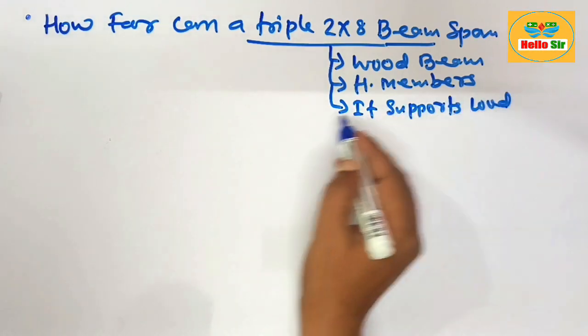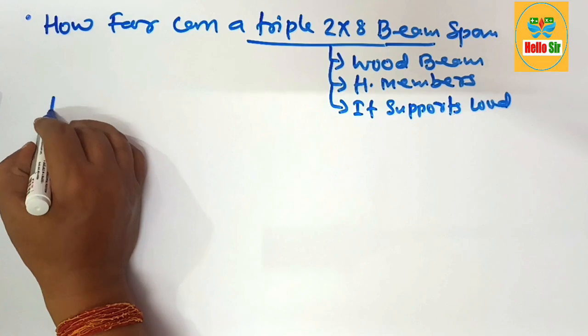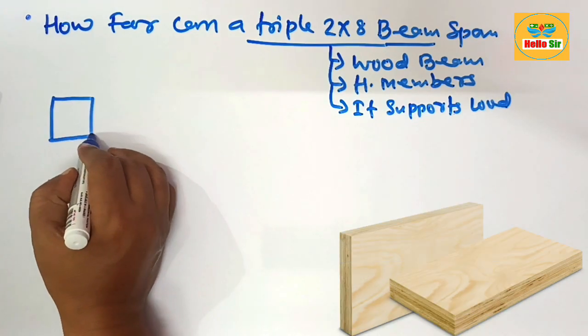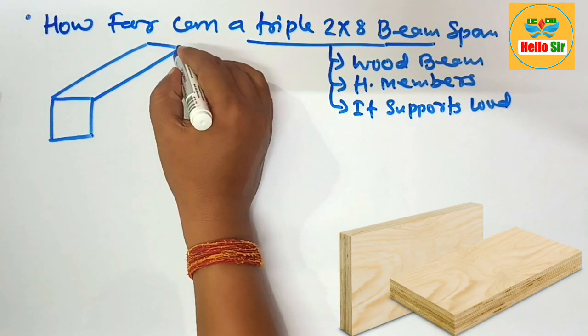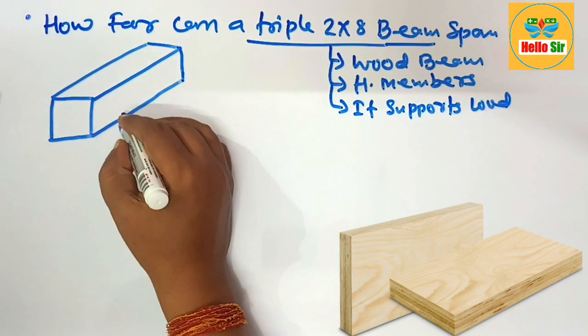First, here you make a rough diagram to understand the different dimensions of this wood beam. Suppose this is a rough diagram to understand the length, width, and depth section of the beam.